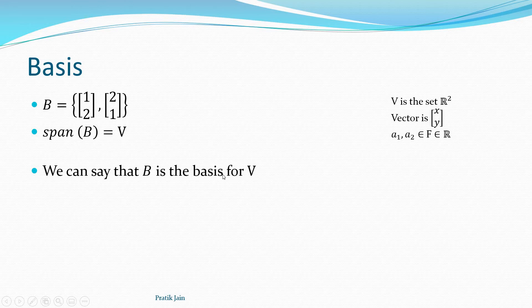When the span of some vectors equals the entire vector space, we can say that B is the basis for V. Basis means, in some sense, they are the base — if you have these vectors you can get any vector in V just by linear combination. You can represent any vector in the vector space if you have these two basis vectors.